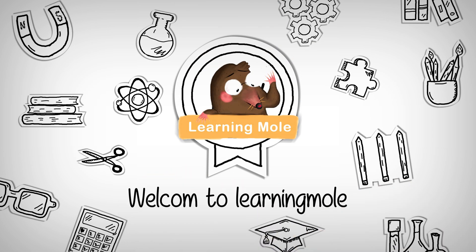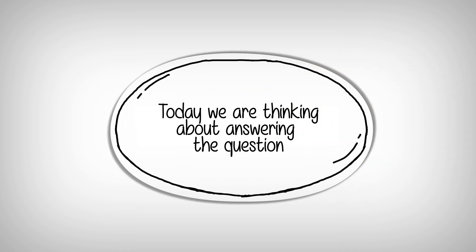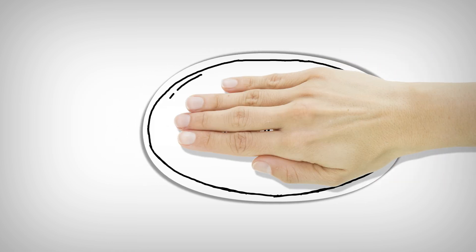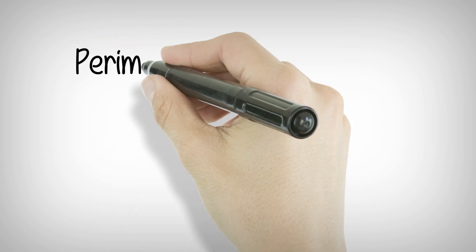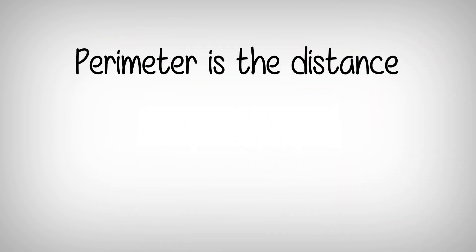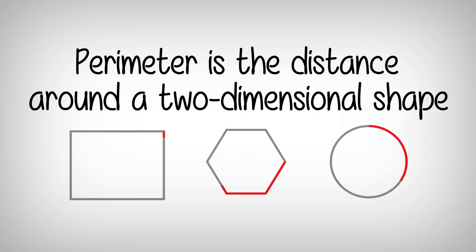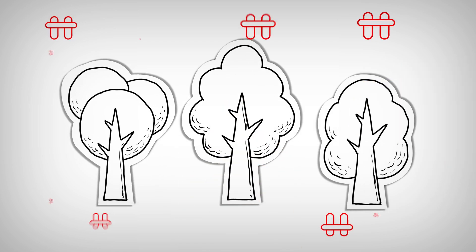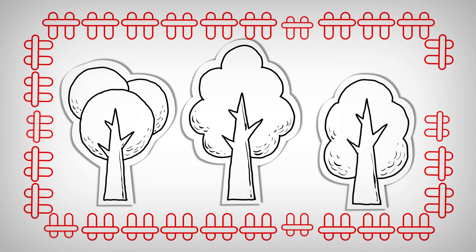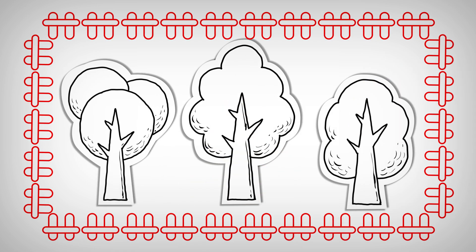Welcome to Learning More. Today we are thinking about answering the question: what is perimeter? Perimeter is the distance around a two-dimensional, or 2D, shape. If you imagine a garden, perimeter is the fencing that goes around the garden.